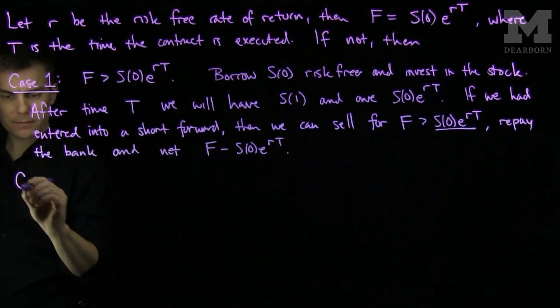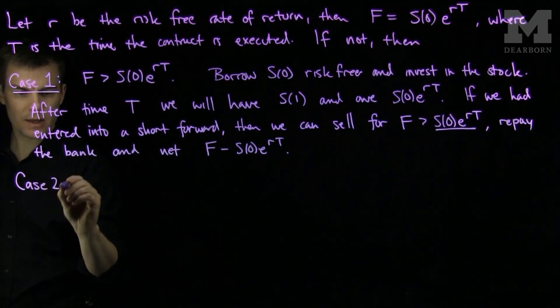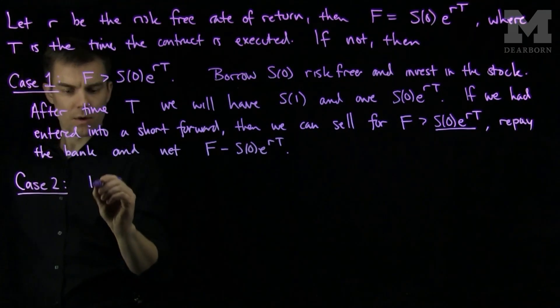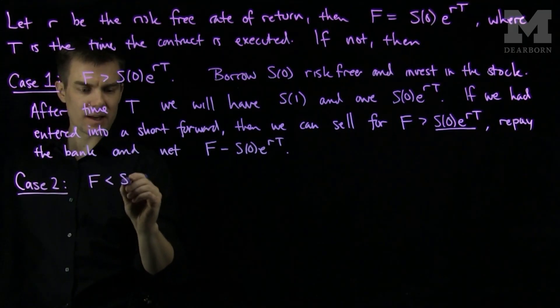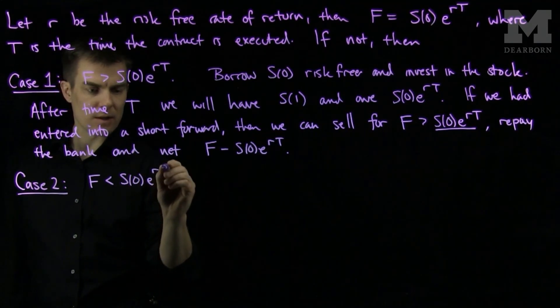Let's consider the second case, case 2, where F, the forward price, is less than S0 times e to the RT.